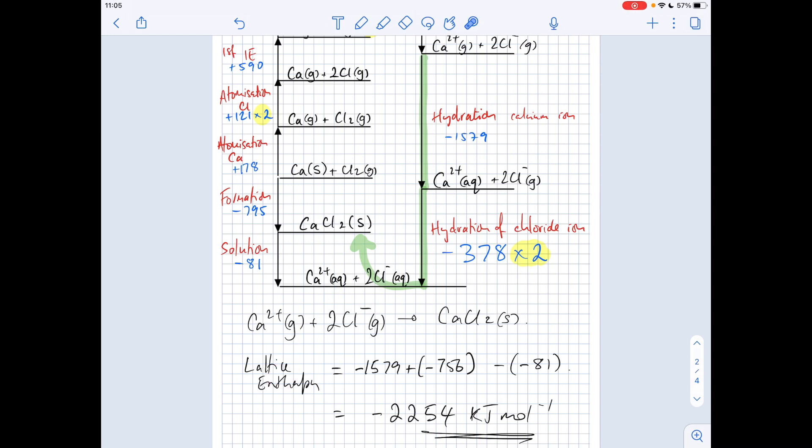So the lattice enthalpy is equal to this enthalpy change here, minus 1579, plus this one here. So that's two times minus 378. So that is plus minus 756. And then minus that one. So it's minus minus 81. So the final answer was minus 2254 kilojoules per mole.